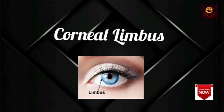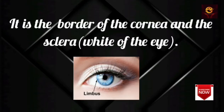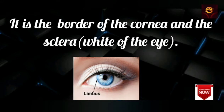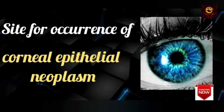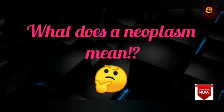Hello friends. In this video, let us learn about the corneal limbus. The corneal limbus is the border of the cornea and the sclera, which is the white of the eye. The term limbus denotes a border between two different types of tissues. The limbus is a common site for the occurrence of corneal epithelial neoplasm.